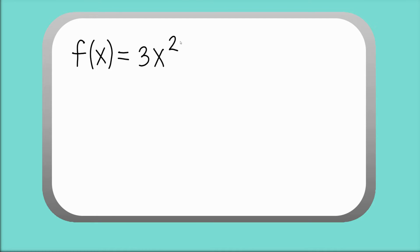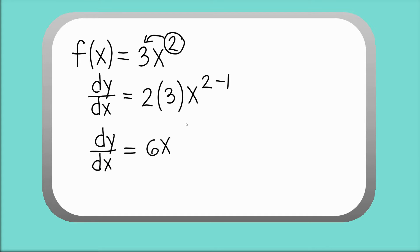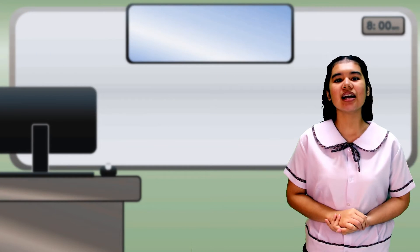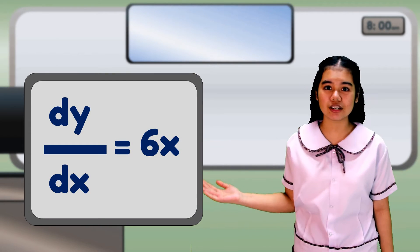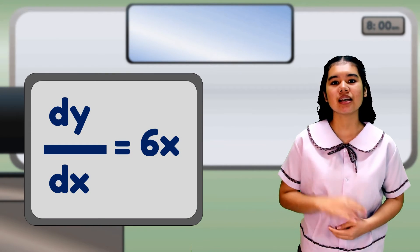In using the power rule, multiply the exponent by the coefficient. As a result, we have 2 times 3x². Then subtract 1 from the exponent. The derivative of this function is dy/dx = 6x.